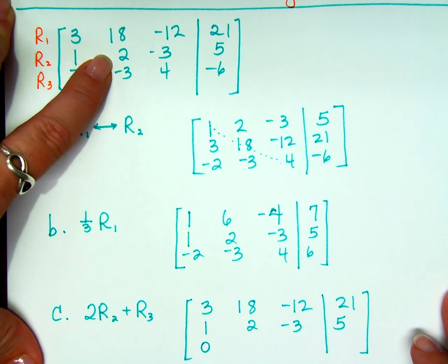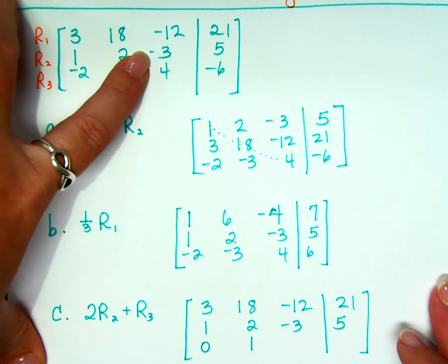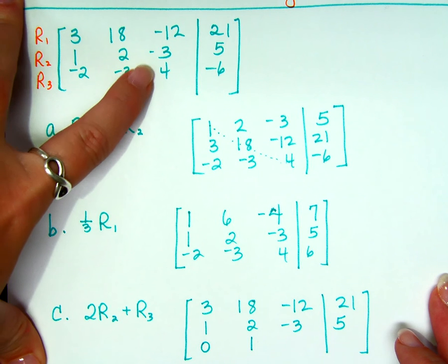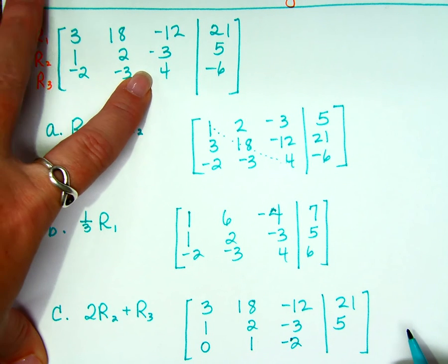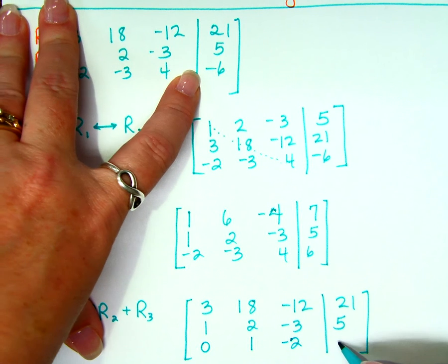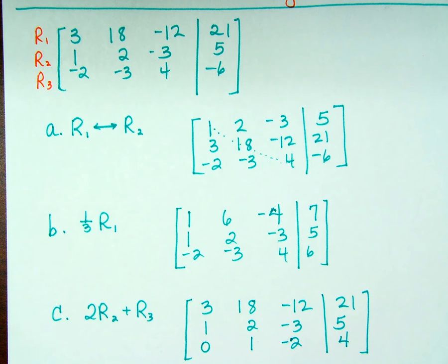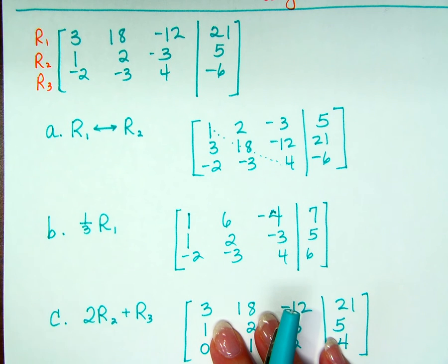Do we need to write this down separately or can we do this in our head? Do it in our head? Okay. So, 2 times row 2, so think about everything here, times 2, and then we want to add it to row 3. So, 2 times 2, plus negative 2, 0. 2 times 2, plus negative 3, 1. 2 times negative 3, plus 4, negative 2, right? Negative 6 plus 4, negative 2. 2 times 5, 10 plus negative 6, 4. Got it? Questions? It's pretty logical. It's just like remembering where to put the answer.